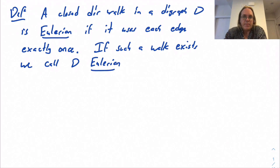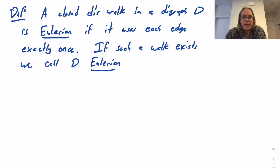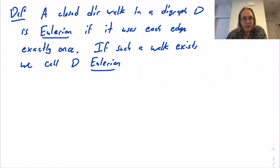This is just the same notion that we had in the undirected setting, but we're now doing it in digraphs where we have directed walks instead of walks. What's going to play out here is very similar to the story for undirected graphs. For undirected graphs, the question of whether or not a graph is Eulerian is actually very simple — it just comes down to a local constraint that every vertex must have even degree. We're going to see that there's an analogous thing that happens in the directed setting.